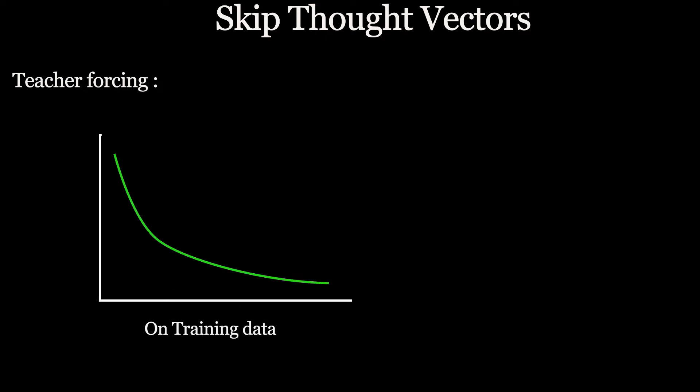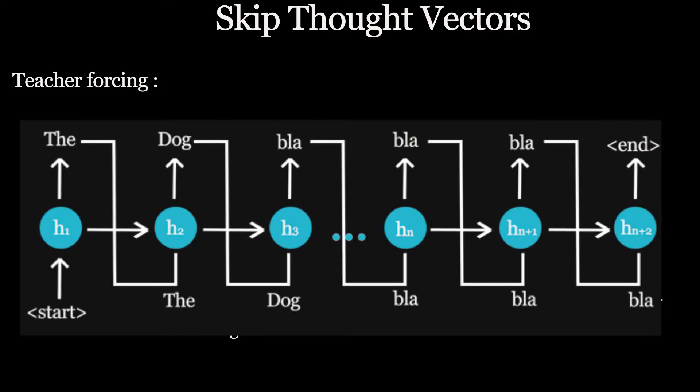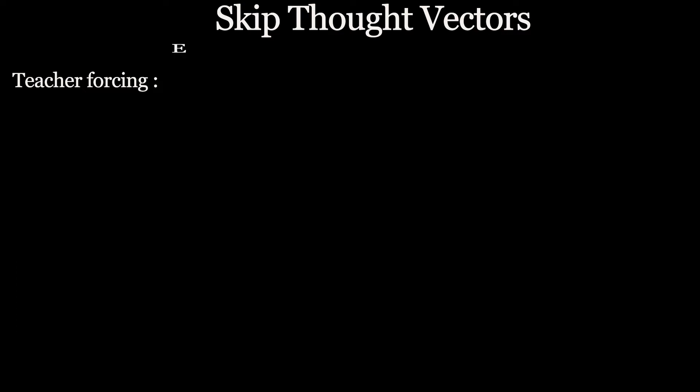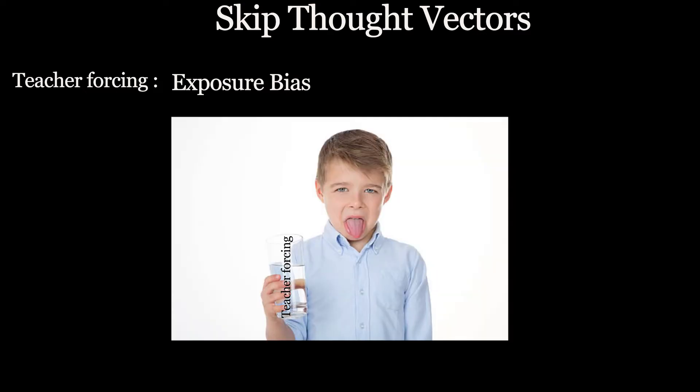But as you can guess, this will lead model to bad generalization because in training we have ground truth by using which we are forcing model to generate correct sequence. But during inference there will be no ground truth available, so the RNN will work like the way it does and produce wrong results on unseen data. And this process is also called exposure bias. But hold on a second. If this method is so bad, then why are we using it?